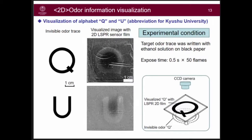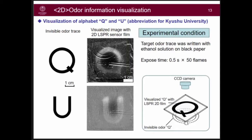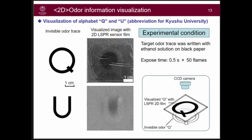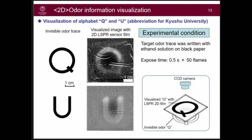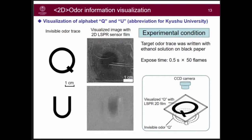Lastly, here is our visualization experiment of the Kyushu University logo. The scale of the invisible odor source was written with a thermal solution. Using a 5×5-centimeter glass LSPR 2D substrate, with an exposure time of 0.4 seconds and 50 frames, the character and the diffusion change of the gas environment can be clearly seen.